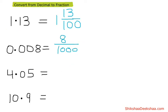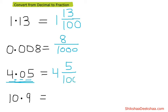Now we have four point zero five. Four is the whole number so we write four, and now we convert point zero five into a fraction. We write five at the top, and because after the decimal point we have two places we write two zeros at the bottom — that means it should be hundred. Our fraction is four and five by hundred.